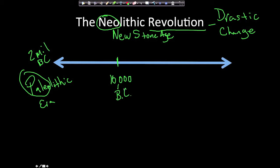Of course these times aren't exact. It's not like one day the cavemen realized, 'Oh, we're in a new age — this is the Neolithic Revolution.' This is something historians came up with at a later date, and 10,000 B.C. is just a nice round number. It happened somewhere around there.